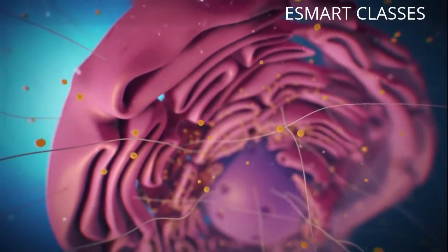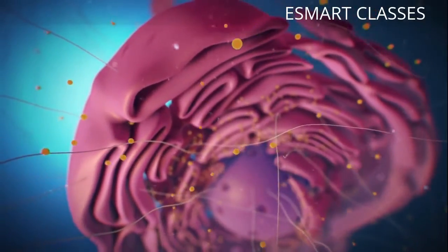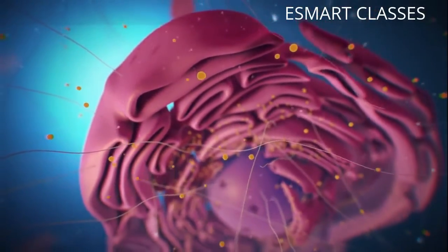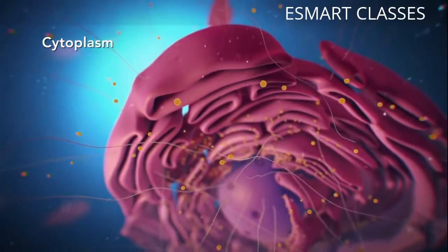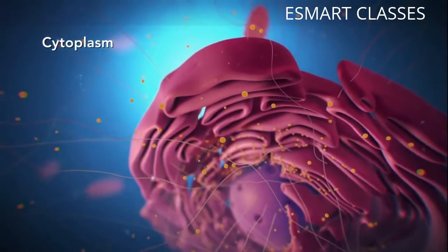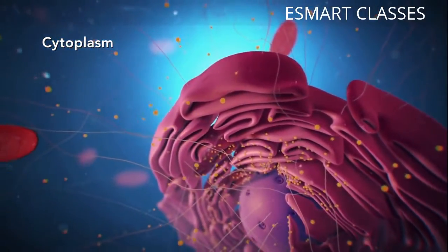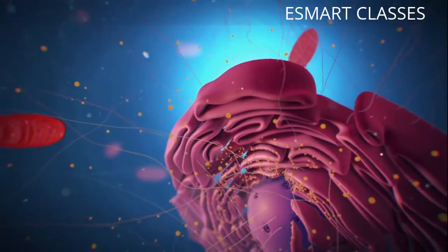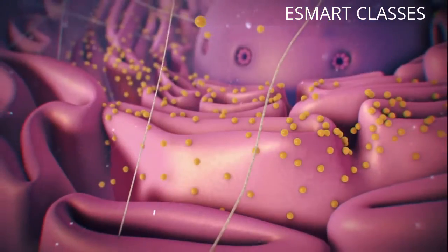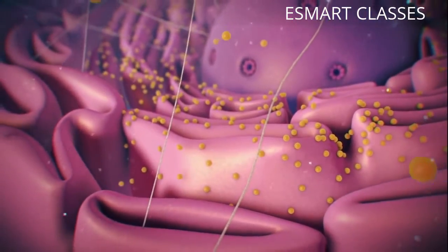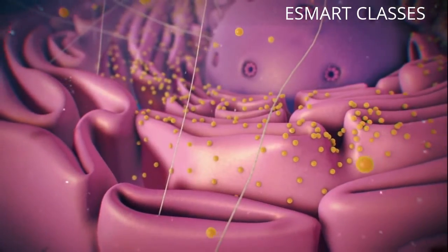Outside the nucleus, the ribosomes and the rest of the organelles float around in cytoplasm, which is the jelly-like substance. Ribosomes may wander freely within the cytoplasm or attach to the endoplasmic reticulum, sometimes abbreviated as ER.